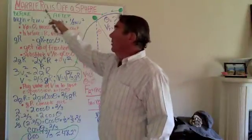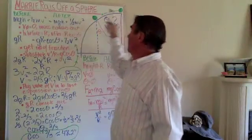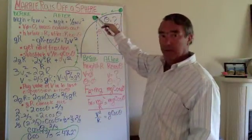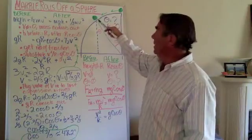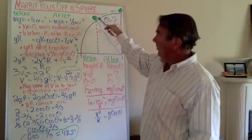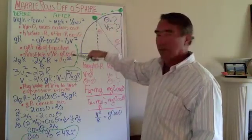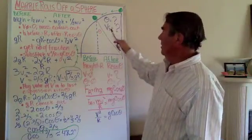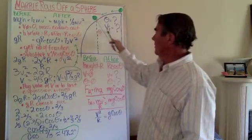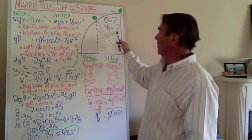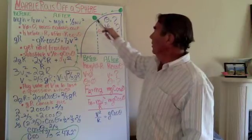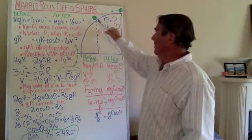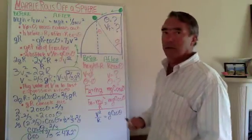The problem is a marble rolls off the top of a sphere, originally picking up enough speed that it separates from the surface of the sphere and goes into freefall. The question is: at the point of separation, how fast is that marble moving and where was it? At what angle theta relative to vertical was it at the time of separation?